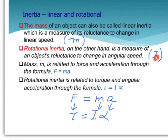In translational motion, we have F = ma. In rotational motion, we have torque equal to rotational inertia times angular acceleration, or τ = Iα.